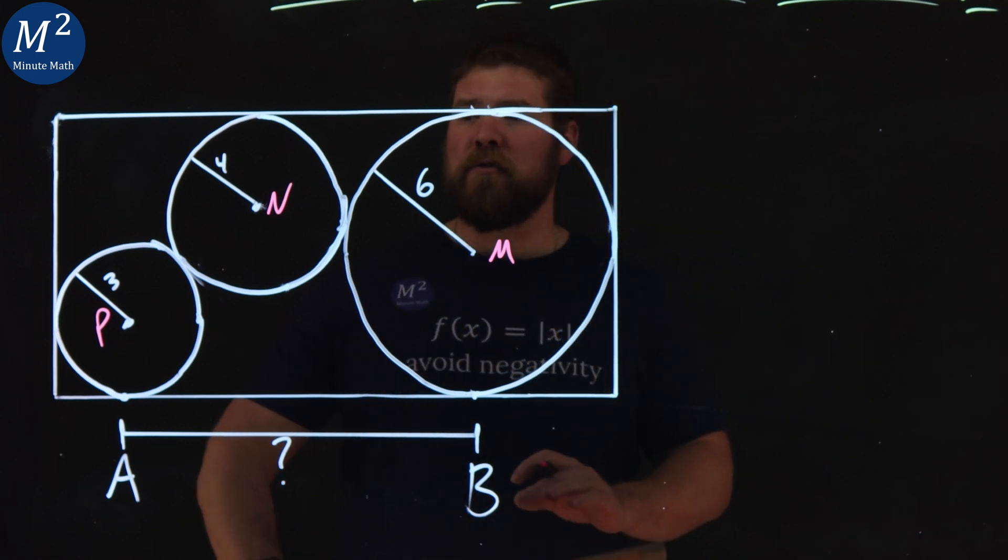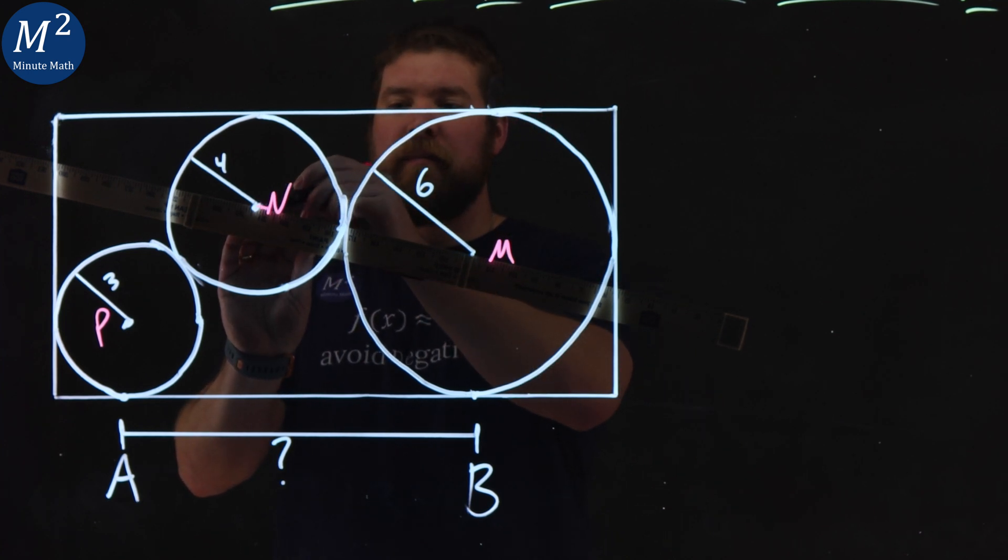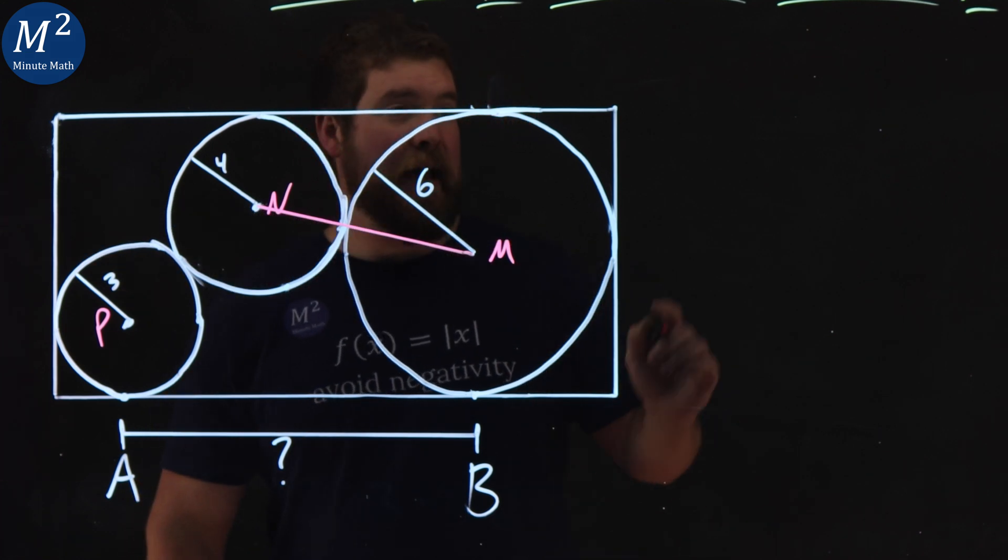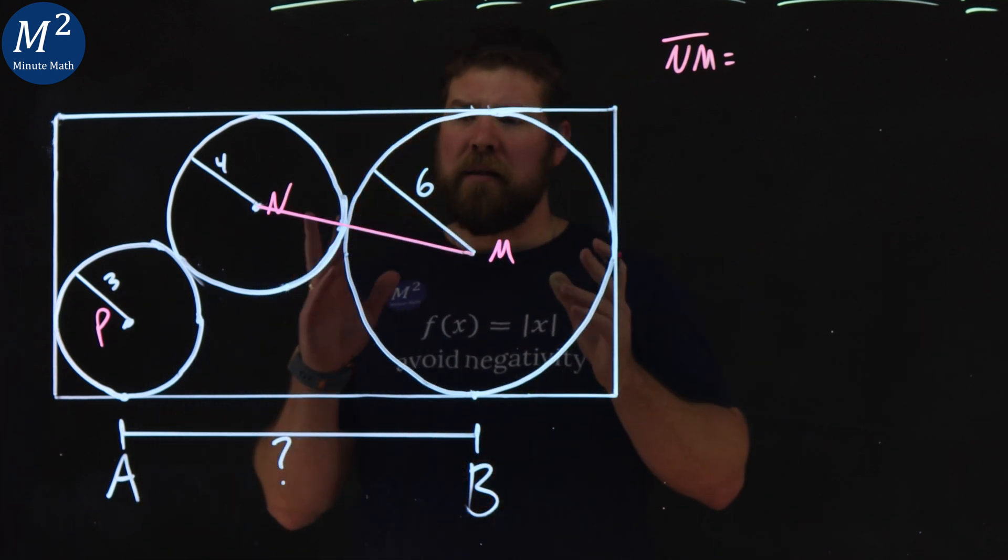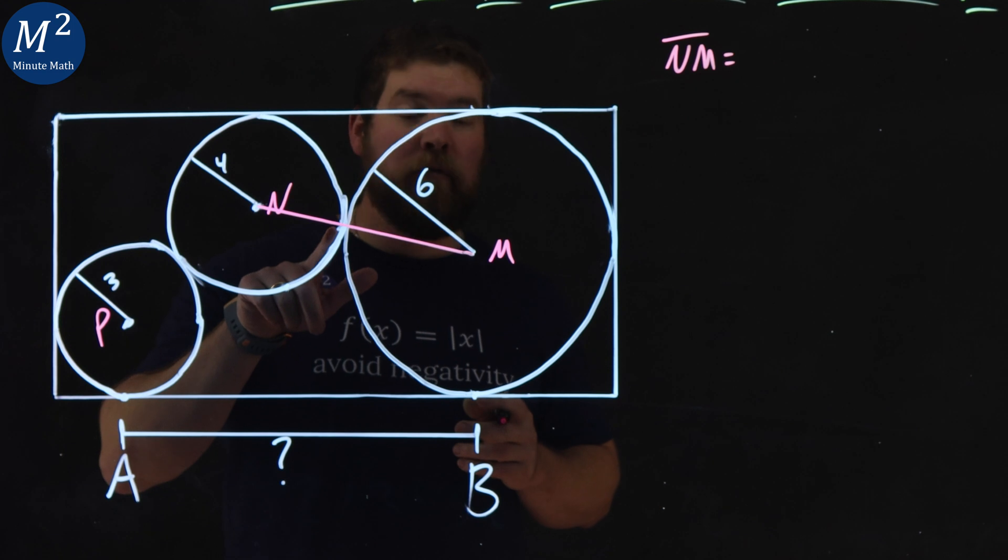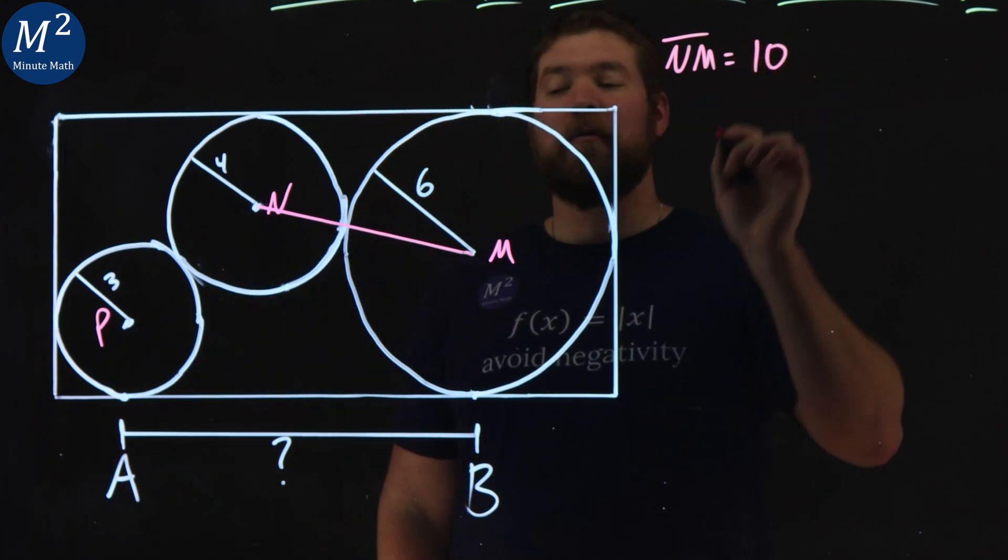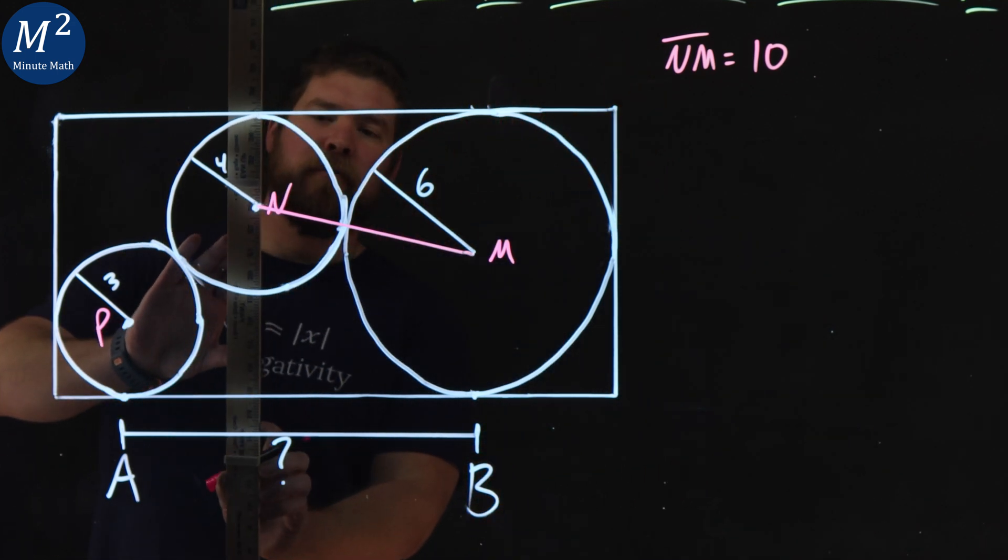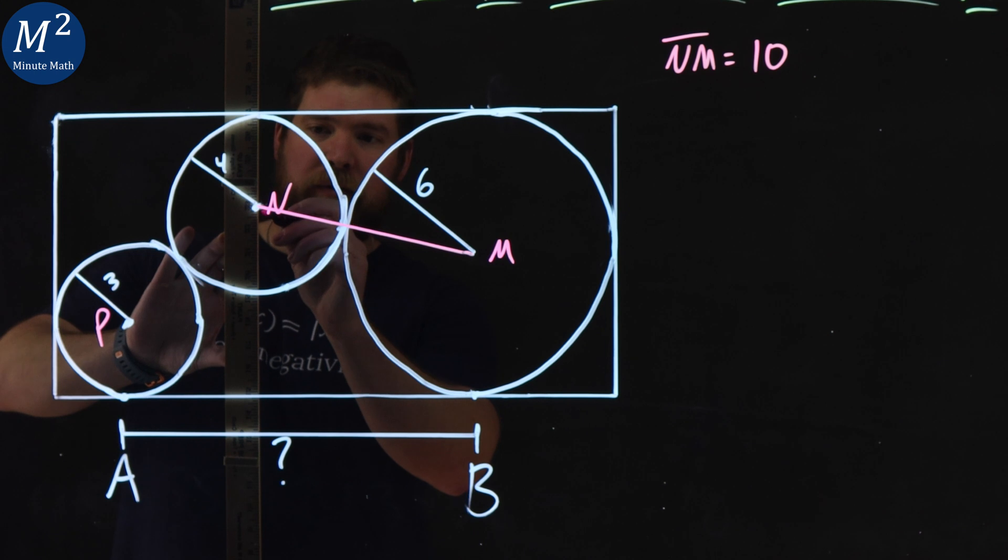All right, what I'm going to do first here is I'm actually going to draw a line from N to M. So let's draw a line here. We drew line NM, and what do we know about that line? Well, that line has a length of radius of 4 and radius of 6. So NM has a length of 10. Now, I'm going to drop a line perpendicular down from the center of the circle N here. Let's make it a straight line for right now, going down here.